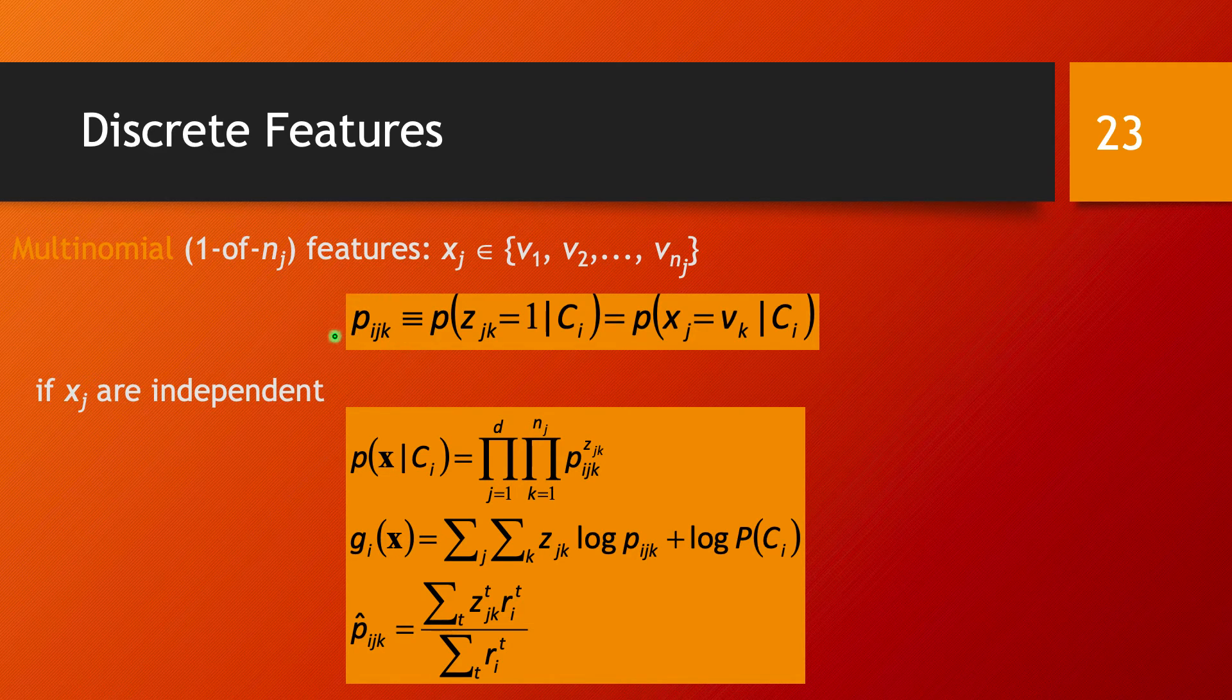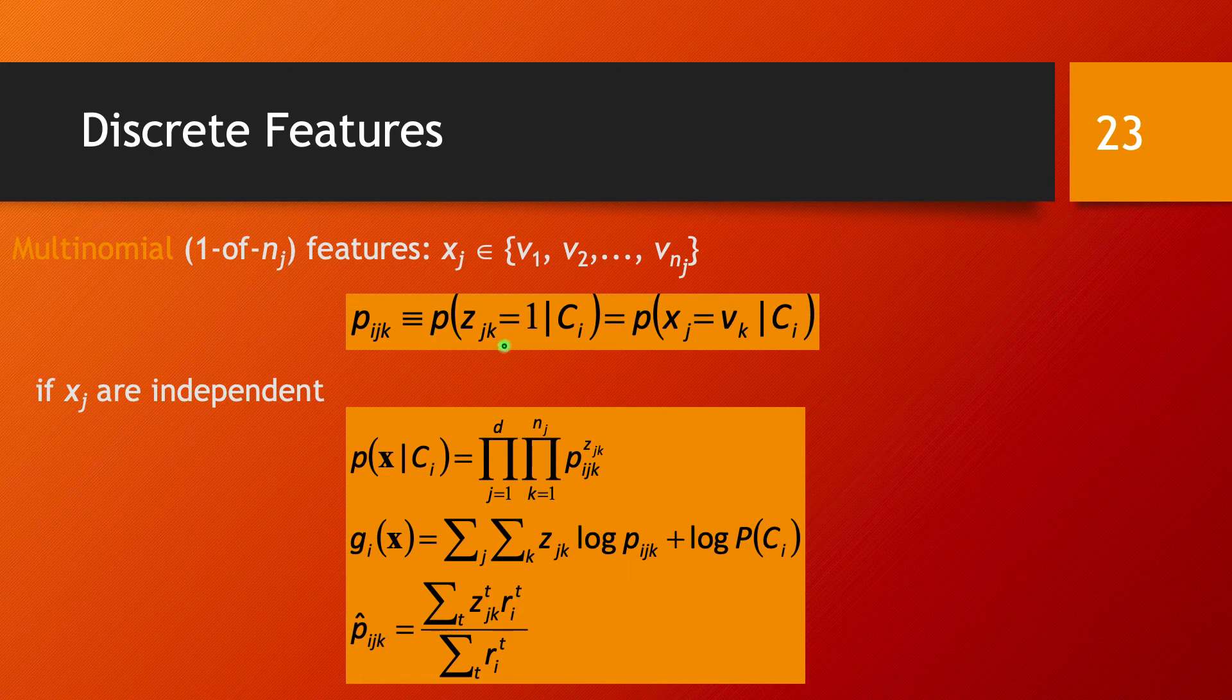In this case, we introduce the probability p_ijk, which stands for the probability that x_j, belonging to class C_i, takes value v_k. One more time: the probability that x_j, belonging to class C_i, takes value k.